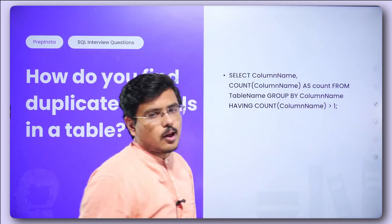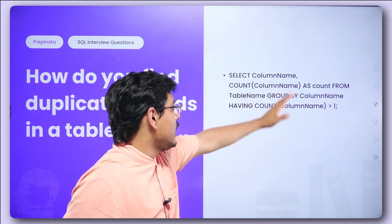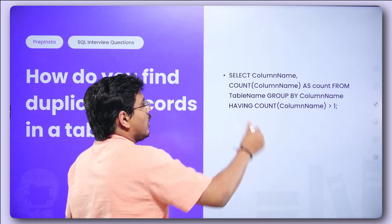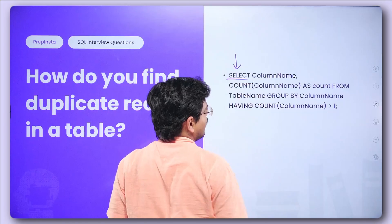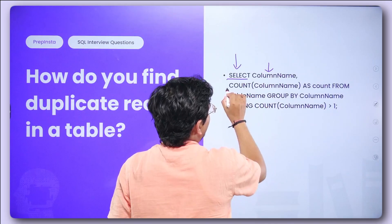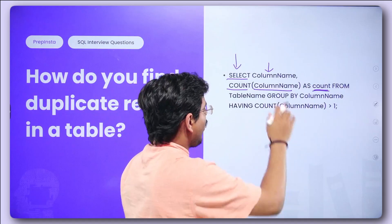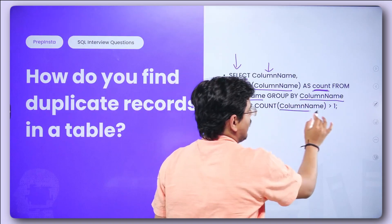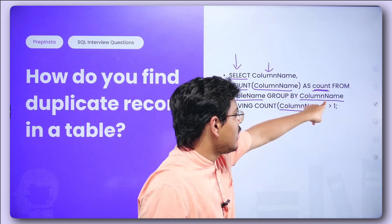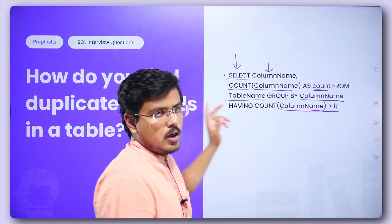How do you find duplicate records in a table? This is a very frequently asked SQL query. You write: SELECT column_name, COUNT(column_name) AS count FROM table_name GROUP BY column_name HAVING COUNT(column_name) > 1. This checks every entry that has appeared more than once and returns those — giving you the duplicate records.